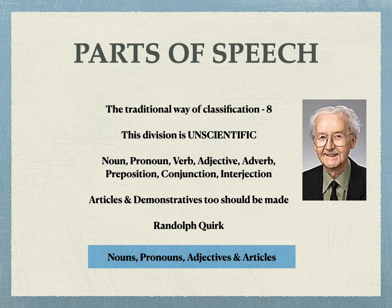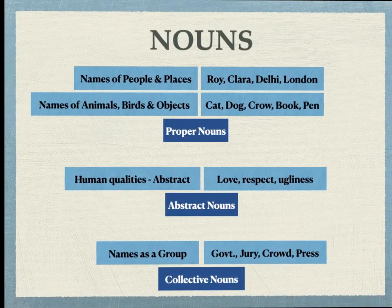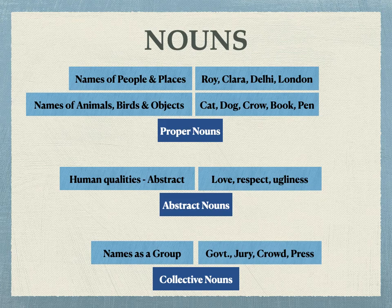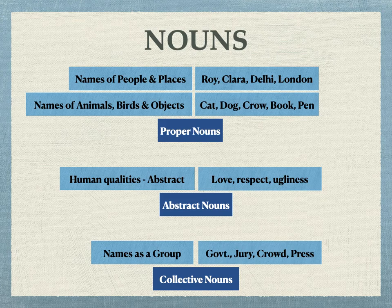In the next slide, we would be beginning with nouns. What do you mean by the term nouns? Nouns include names of people and places — names of people like Roy, Clara, Rahul, Deepa, and places like Delhi, London, Calcutta, America. Again, names of animals, birds and objects like cat, dog, crow, book, pen, etc. All these can be grouped into proper nouns — they are the real names of certain things, proper kind of things, and that is how we call them proper nouns.